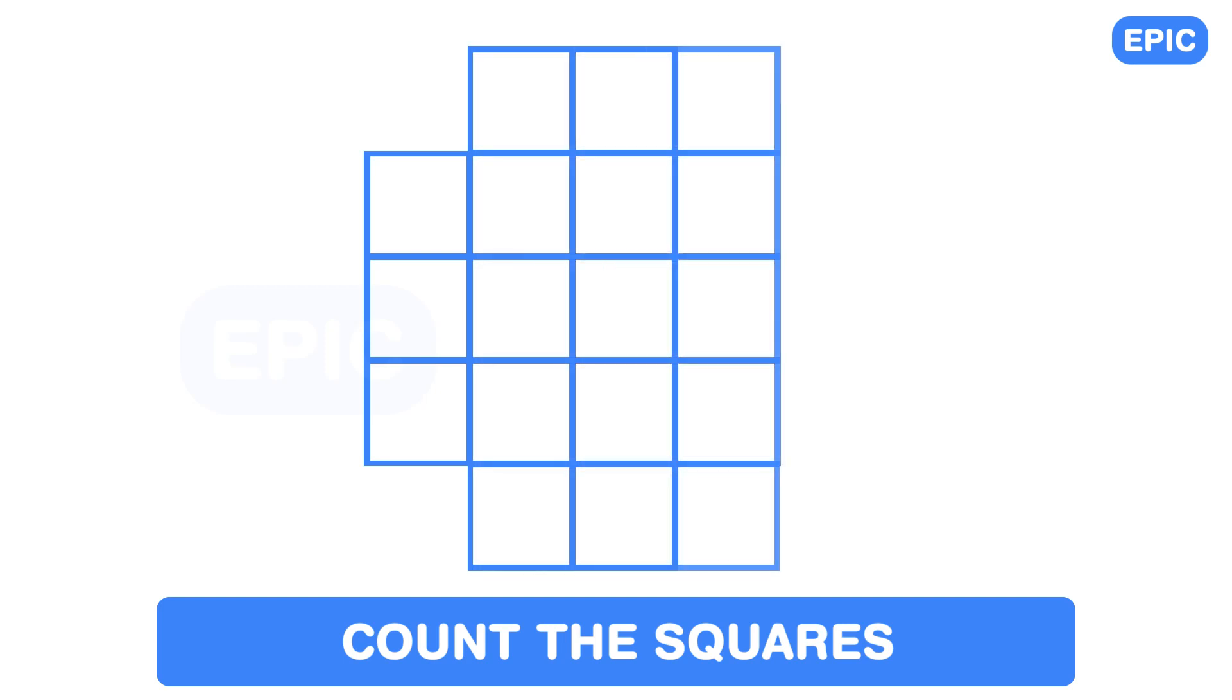I had asked this math puzzle in a previous video on counting the total number of squares. This is a 5 x 5 square from which we have removed 4 squares at the corners.